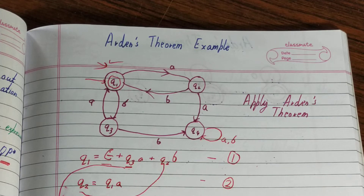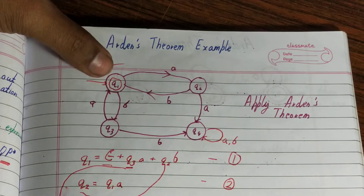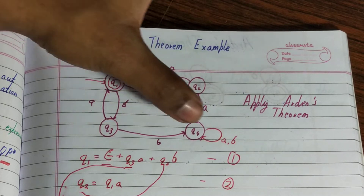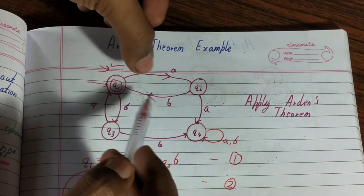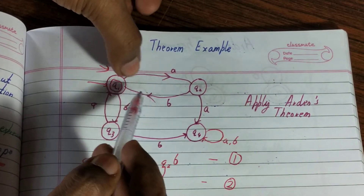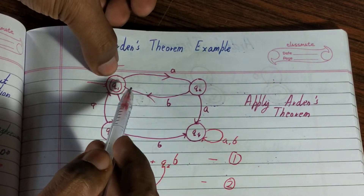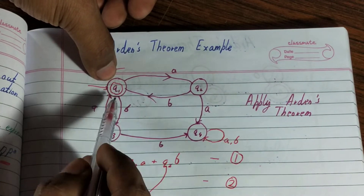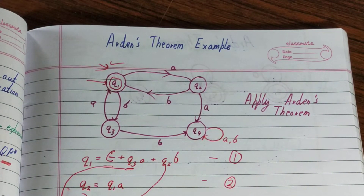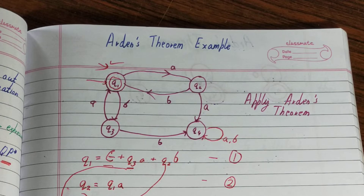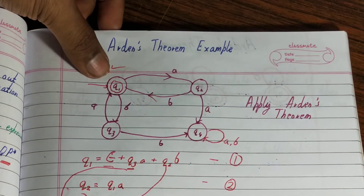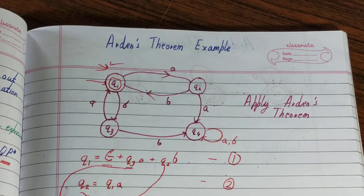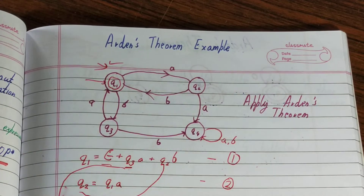First, we need to see how many states there are. There are four states: q1, q2, q3, and q4. We need to identify all the incoming edges — that is, the arrows pointing towards each state. For q1, the incoming edges are q2b and q3a, and this is how we identify incoming edges.